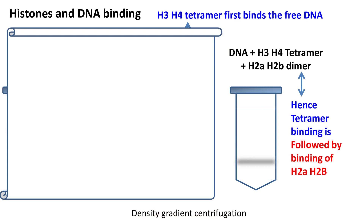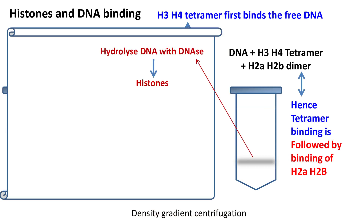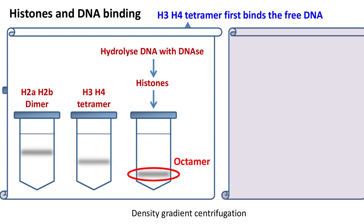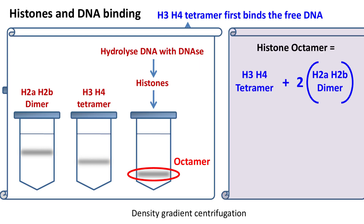Now, if we treat this structure with DNase, then only the histones remain intact whereas the DNA is hydrolyzed. If we measure the sedimentation profile of these histones and compare it with the sedimentation profile of the dimer and tetramer, it turns out that this structure is a histone octamer. This means the DNA is bound around a histone octamer. So the H3-H4 tetramer binds 2 H2A-H2B dimers to form a histone octamer around which the DNA is bound.